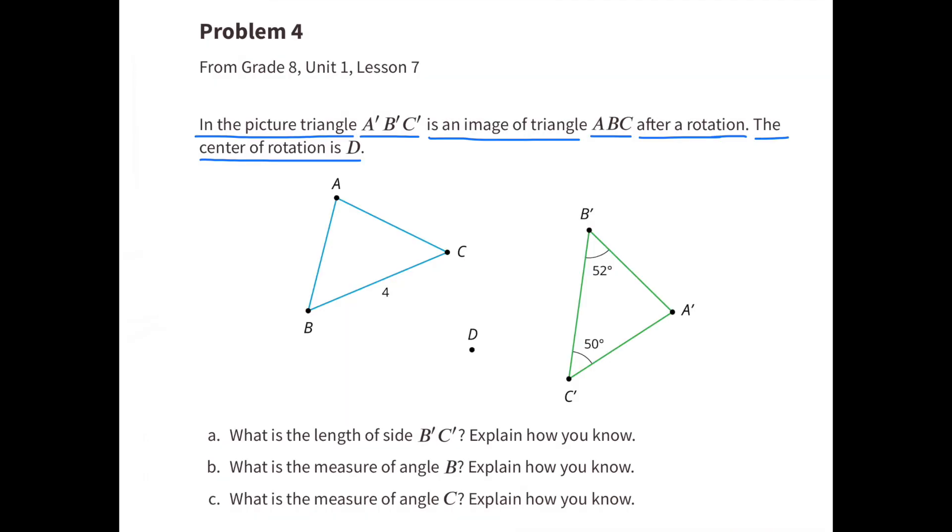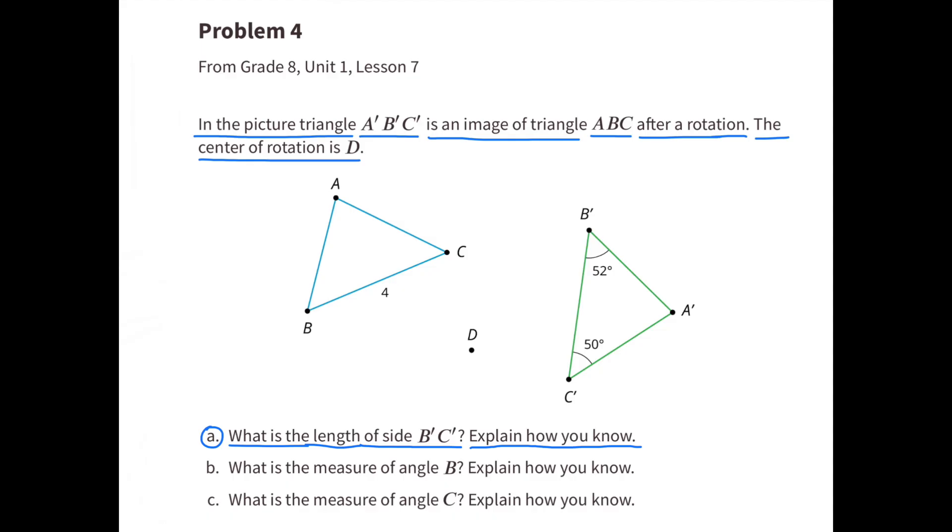Number 4. In the picture, triangle A'B'C' is an image of triangle ABC after a rotation. The center of rotation is D. A. What is the length of side B'C'? Explain how you know. The length of side B'C' will be the same as the length of side BC. I know that their lengths are the same because side B'C' are the corresponding angles to side BC.